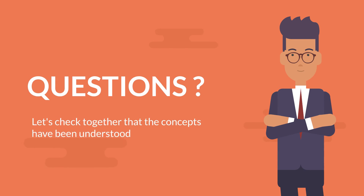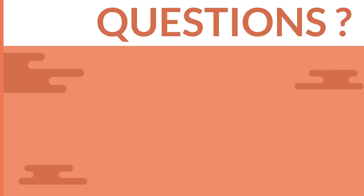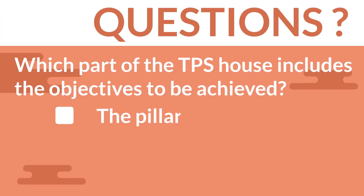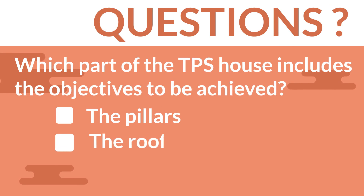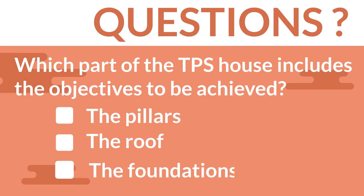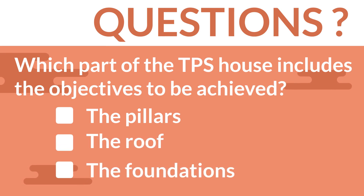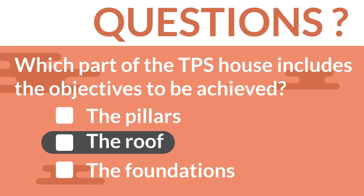Let's check together that the concepts have been understood. First question: which part of the TPS House includes the objectives to be achieved? The correct answer is the roof.